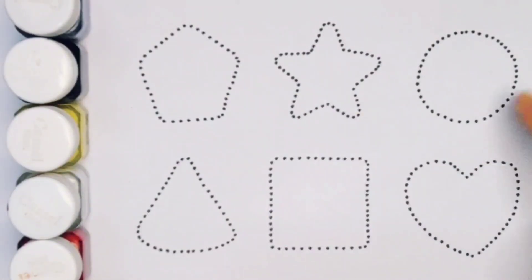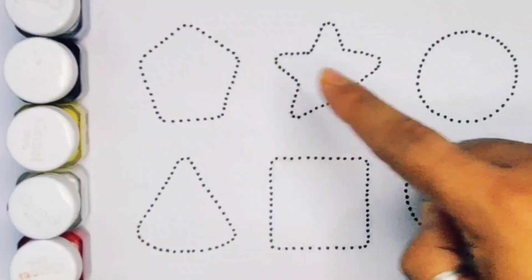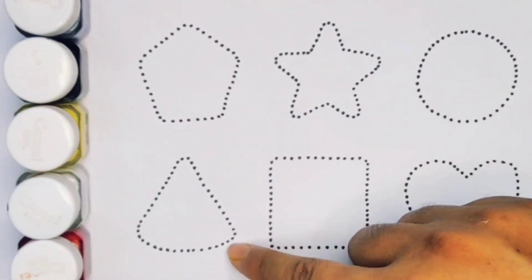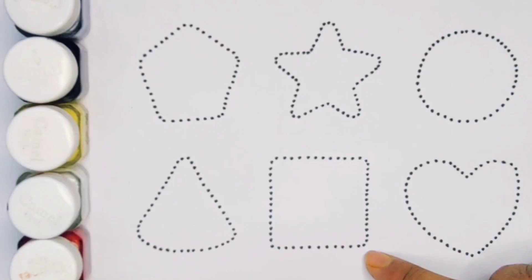Now let's learn the 2D shapes. Pentagon, Star, Circle, Triangle, Square and Heart.